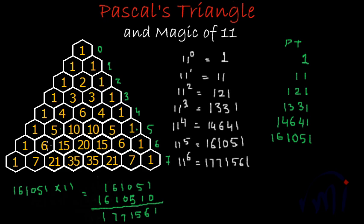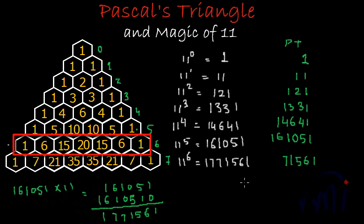This cannot be seen directly in the sixth row of Pascal's Triangle, but following the same procedure of noting from the right-hand side: the rightmost number is 1, then 6, then 15 — write 5 and carry 1. Next is 20; 20 plus 1 = 21, write 1 and carry 2. Then 15 plus 2 = 17, write 7 and carry 1. Then 6 plus 1 = 7, and finally 1.